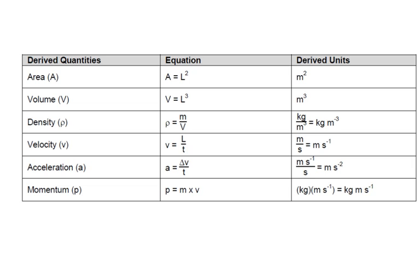OK, here I've got some more examples of derived quantities from the base units. So, firstly, area. Well, area is a length times a length, so that's meters squared.